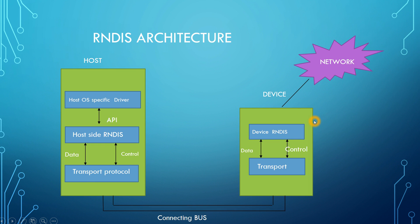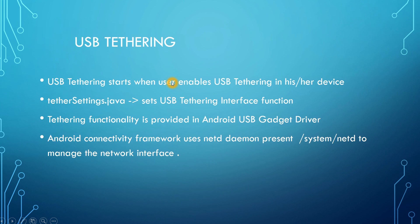The device's responsibility is to interpret the control messages sent by the host and respond to them with appropriate data, indicating the network and device status to the host, and exchanging data messages as requested by the host. This entire picture depicts the RNDIS architecture. USB tethering will start when the user enables USB tethering on his or her device — the user is the one who initiates the entire USB tethering functionality.